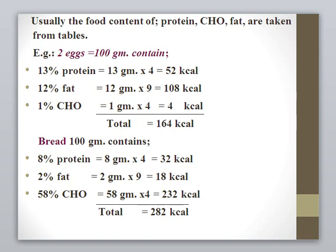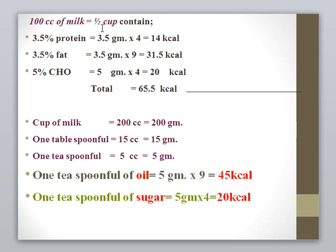The same calculation applies for bread and milk. Milk composition: 3.5% protein, 3.5% fat, and 5% carbohydrate, so its main constituents are fat and protein. By multiplying by the calorie value for each gram, the result is 65.5 kilocalories per 100 grams. A cup of milk contains 200 cc, which equals 200 grams.